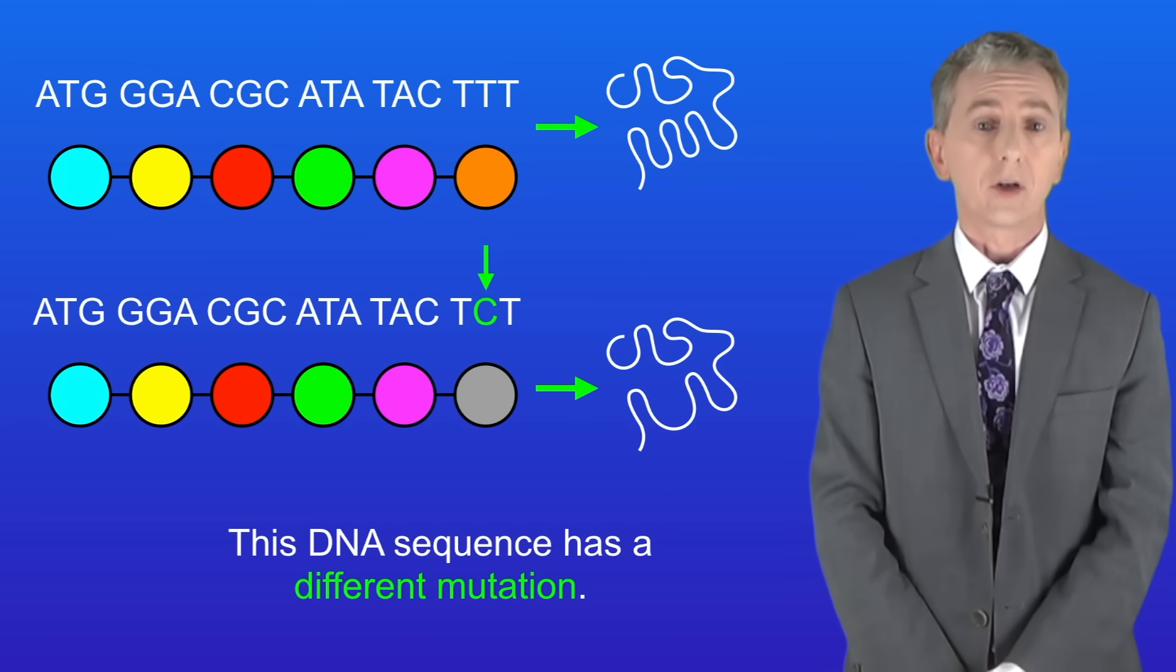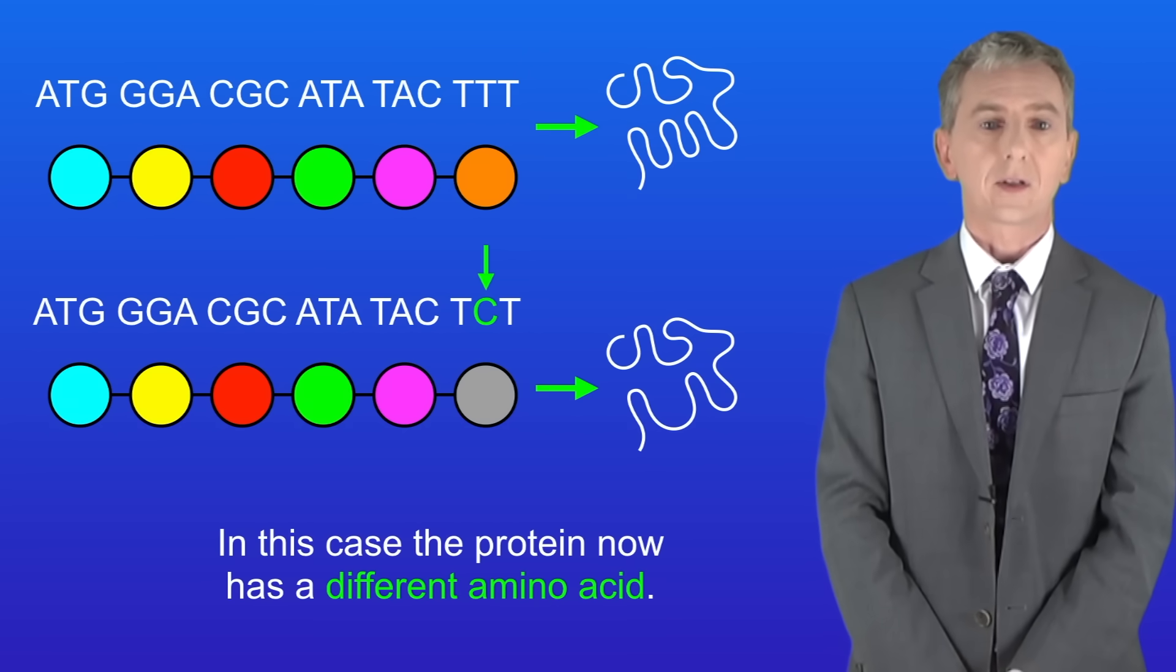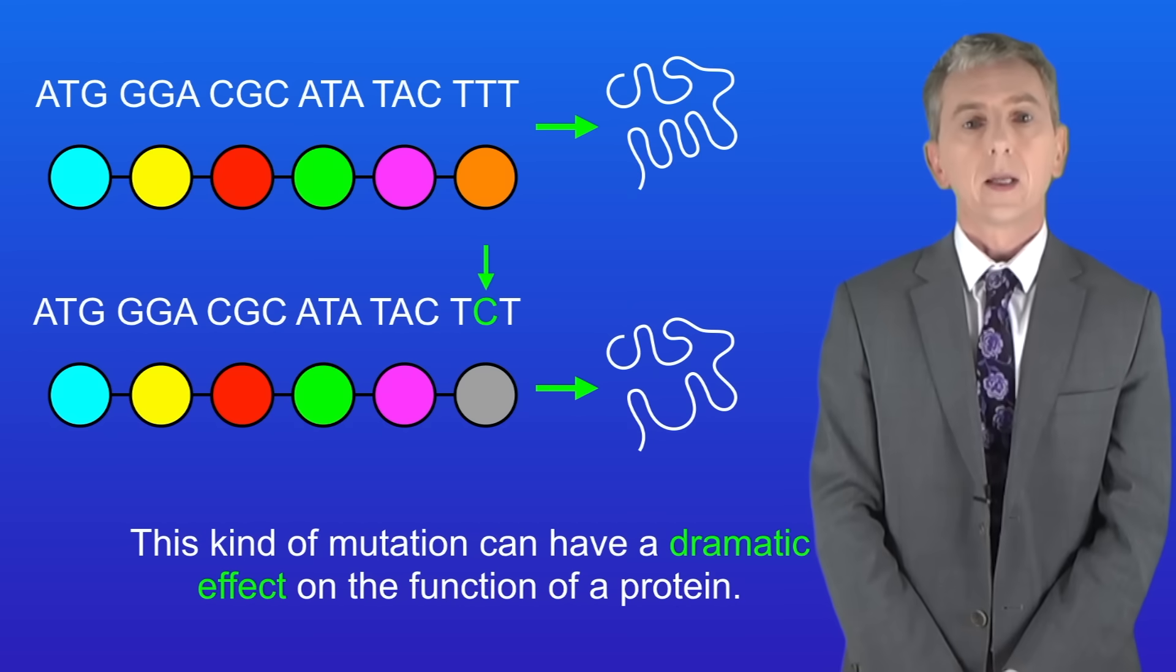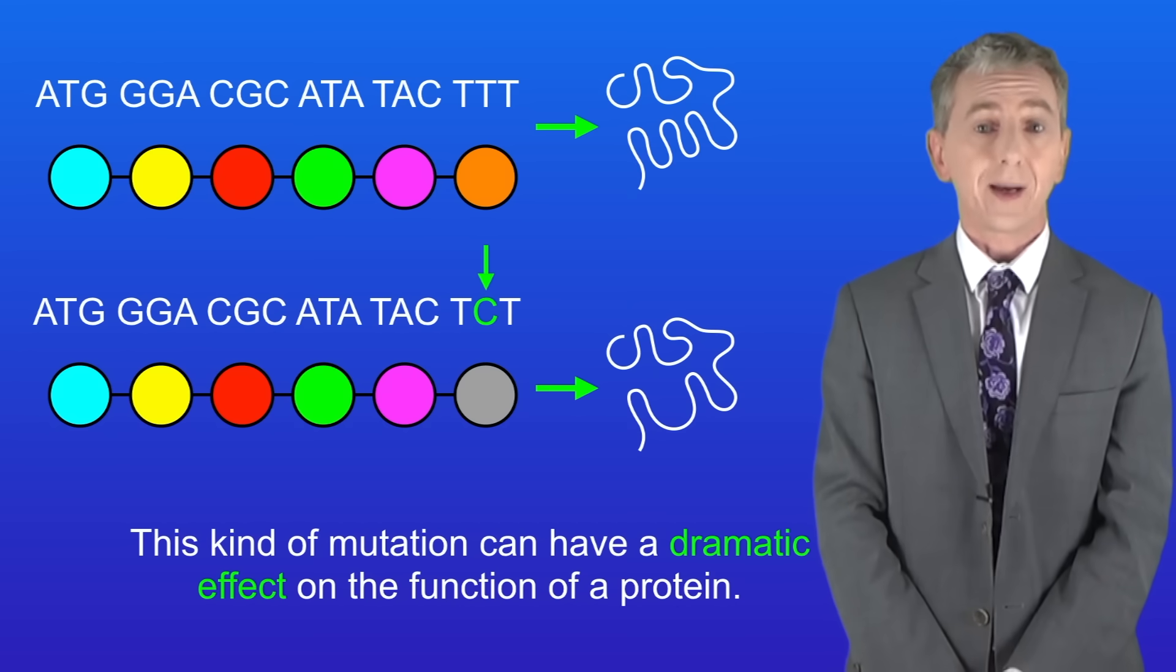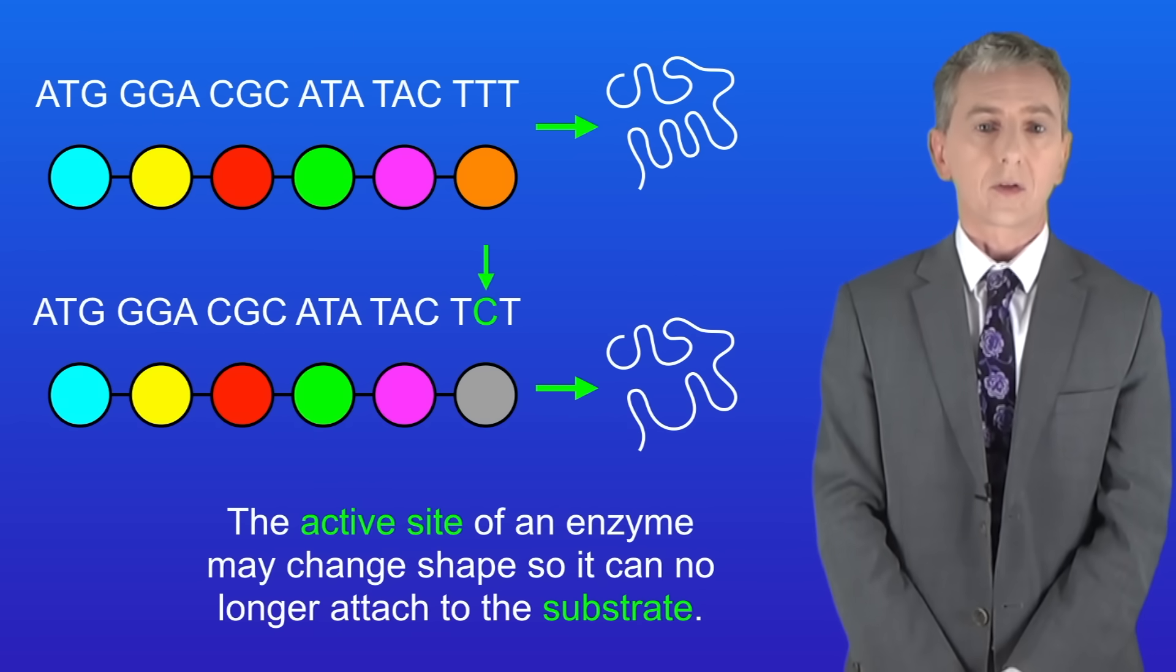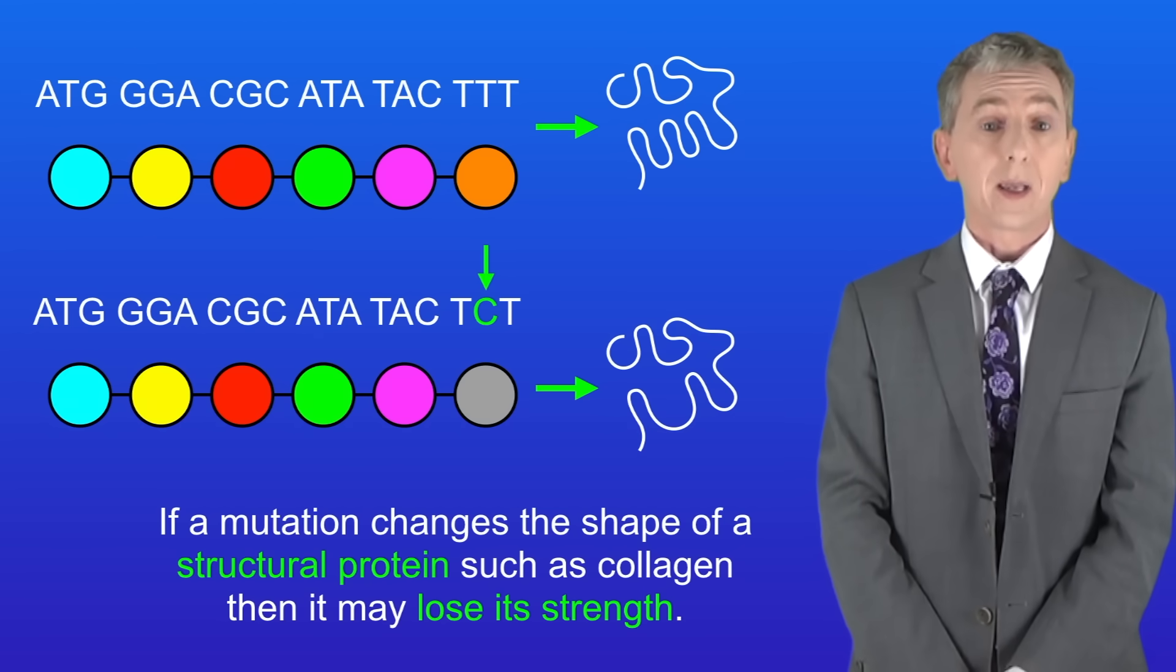This DNA sequence has a different mutation. In this case the protein now has a different amino acid, and this change has altered the shape of the protein. Now this kind of mutation can have a dramatic effect on the function of a protein. For example, the active site of an enzyme may change shape so it can no longer attach to the substrate. If a mutation changes the shape of a structural protein, such as collagen, then it may lose its strength.